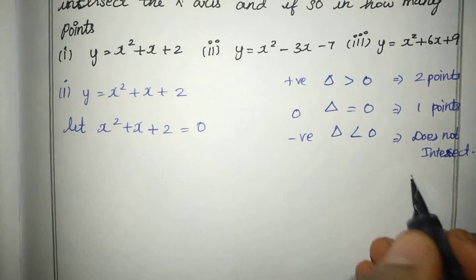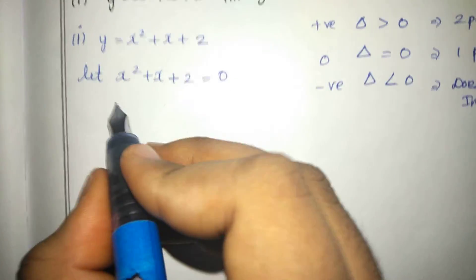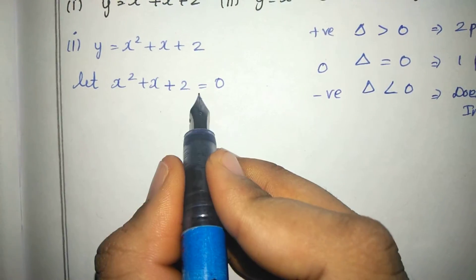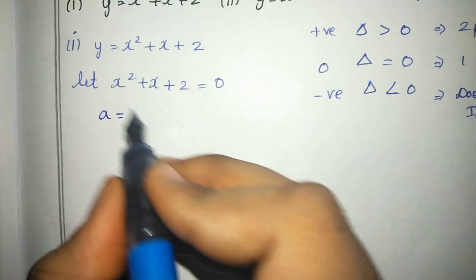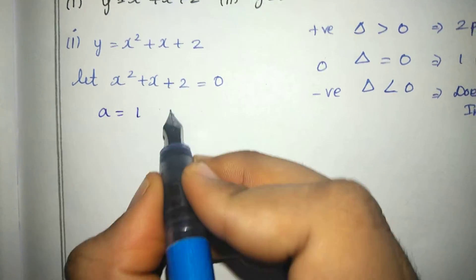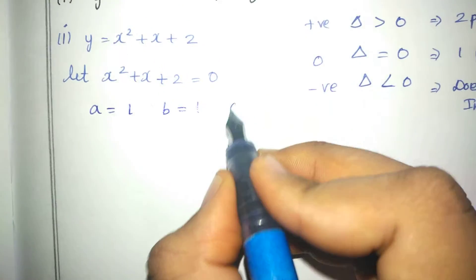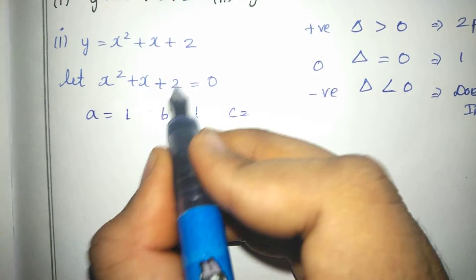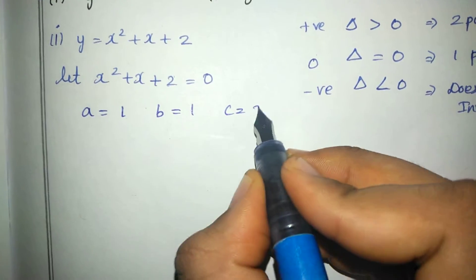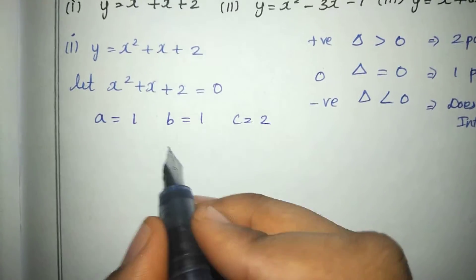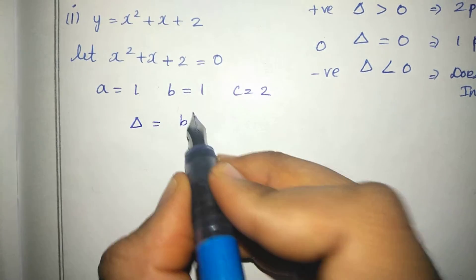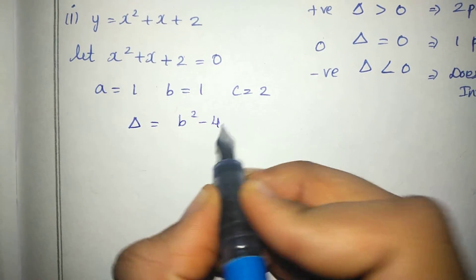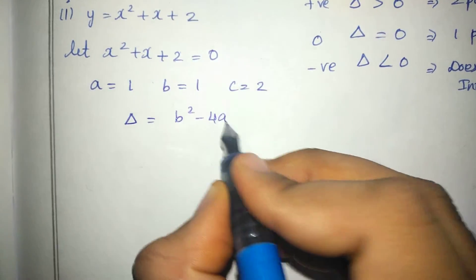Now we use the discriminant. We identify the a, b, c values: a value is 1, b value is 1, c value is 2. Now we apply the discriminant formula: b² minus 4ac.